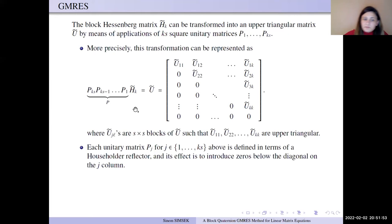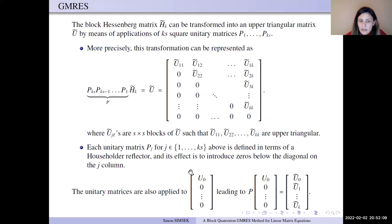Each unitary matrices Pj is a Householder reflector. So, its effect is to introduce zeros below the diagonal. The unitary matrices are also applied to these matrices, applied to P1, P2, and Pks.